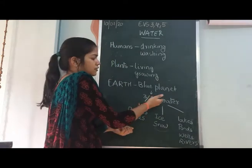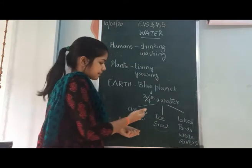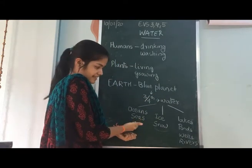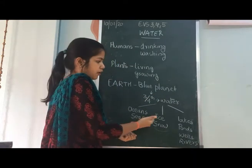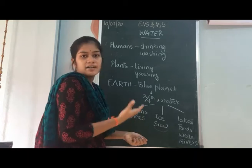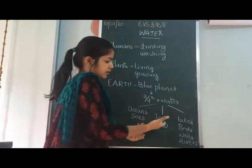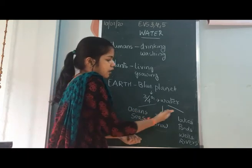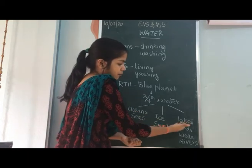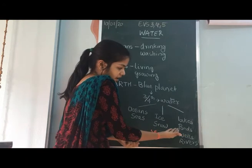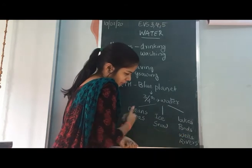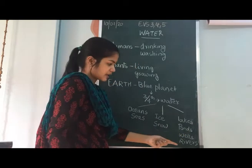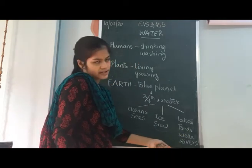The majority of this three-fourths of water occurs as oceans and seas. Some occurs in a frozen state known as ice or snow. And some occurs in the form of lakes, ponds, wells, and rivers.